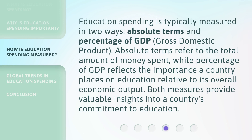Education spending is typically measured in two ways: absolute terms and percentage of GDP, gross domestic product. Absolute terms refer to the total amount of money spent, while percentage of GDP reflects the importance a country places on education relative to its overall economic output. Both measures provide valuable insights into a country's commitment to education.